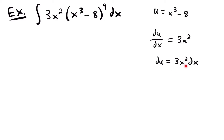Notice that 3x squared dx can be found in our integral. We have 3x squared and dx, so we can replace those two terms with du, and replace x cubed minus 8 with u. Our entire integral will be rewritten in terms of u — there will no longer be any x's in the integral, which is the goal. This will be equal to the integral of u to the ninth power times du.